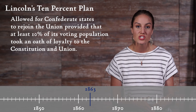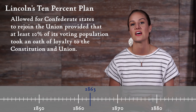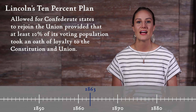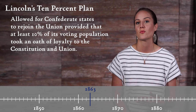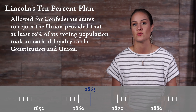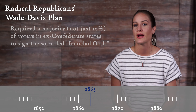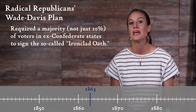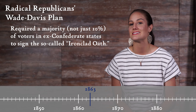This plan allowed for Confederate states to rejoin the Union provided that at least 10% of its voting population took an oath of loyalty to the Constitution and Union. His desire was for a moderate Reconstruction, but the Radical Republicans, a faction within the Republican Party, thought this was too lenient on the South, whom they viewed as responsible for the war. They also feared that without significantly reconstructing the South's economy and way of life, Blacks would again be enslaved under the same planter system. The Radicals put forth the Wade-Davis Plan, which required a majority, not just 10%, of voters in ex-Confederate states to sign the so-called Ironclad Oath. However, Lincoln refused to sign it.